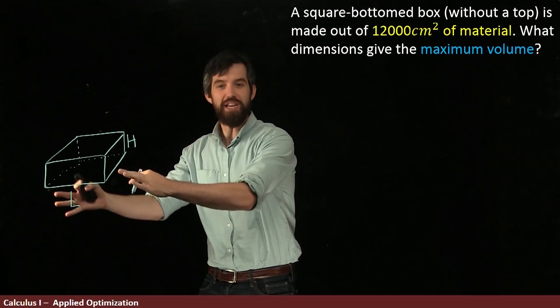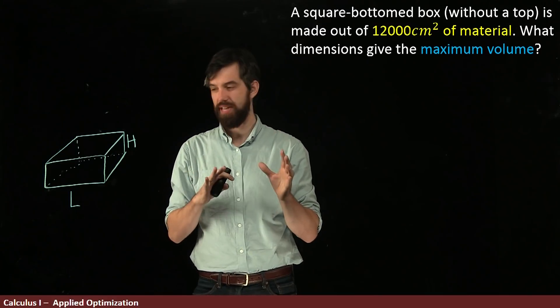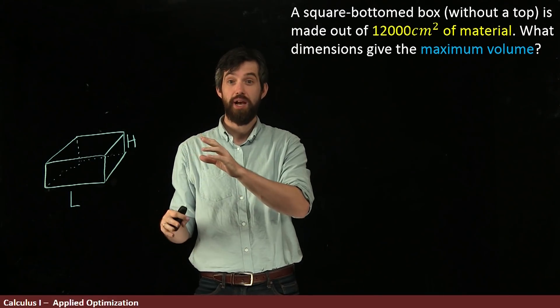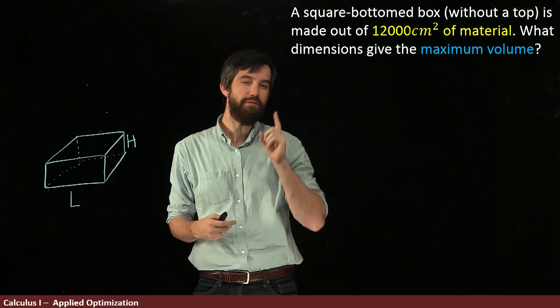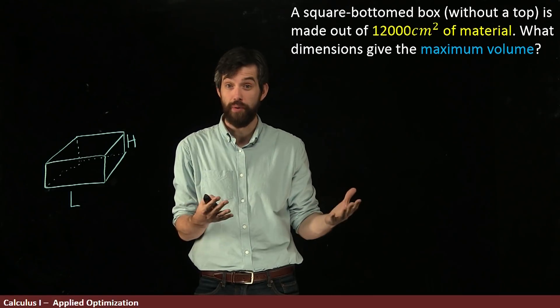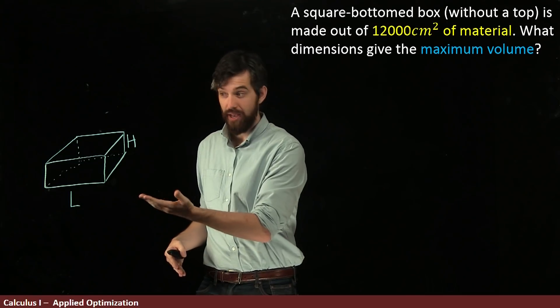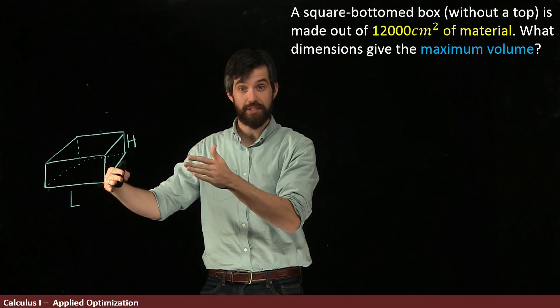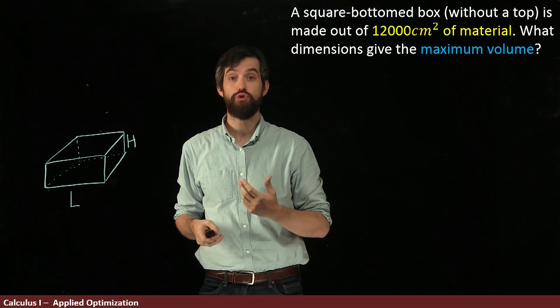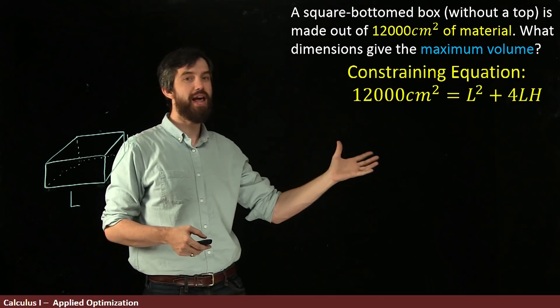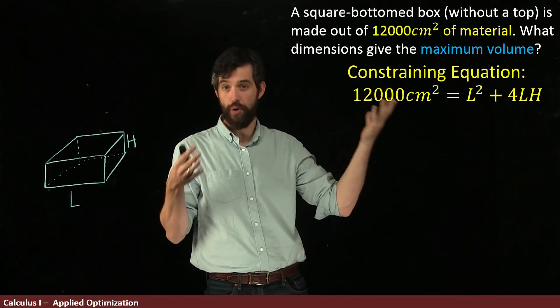Now I want to go and try to write down some equations that reflect this particular box. Now, the first equation that I'm going to write down that relates to this box is about the constraint. The constraint in this problem is that I only have 12,000 centimeters squared of material to work with. From that 12,000 centimeters squared of material, I have to make the base and the four different sides. So the total area here is going to be constrained by this 12,000 centimeters squared. So this is the formula that I get. I call it my constraining equation.